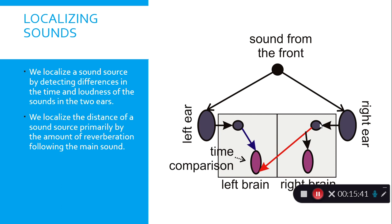We localize sound sources by detecting differences in the time and loudness of sound arriving at our two ears. We judge distance primarily by the amount of reverberation following the main sound. By comparing timing between the left and right ear signals, the brain can determine the general direction from which a sound is coming.